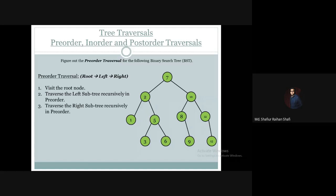So we have to visit in pre-order manner. We visit the root node first and print its value, then traverse the left subtree in pre-order manner, and then the right subtree in pre-order manner.